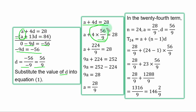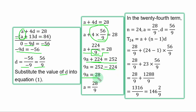To get A, substitute D equals 56 over 9 into equation 1: A plus 4 times (56 over 9) equals 28. This gives A plus 224 over 9 equals 28. Multiplying through by 9 to clear fractions and transferring 224 to the right-hand side, we get 9A equals 28 times 9 minus 224. Dividing both sides by 9, A equals 28 over 9.